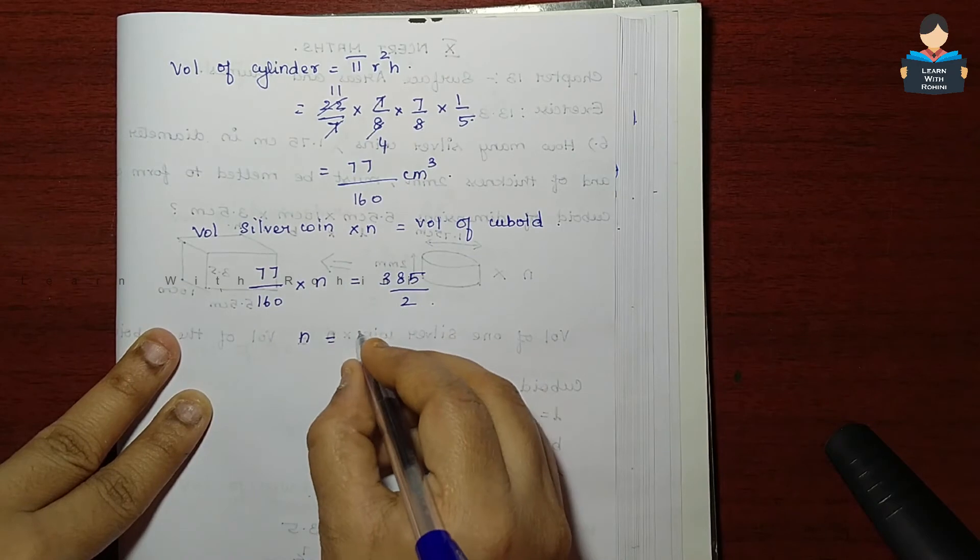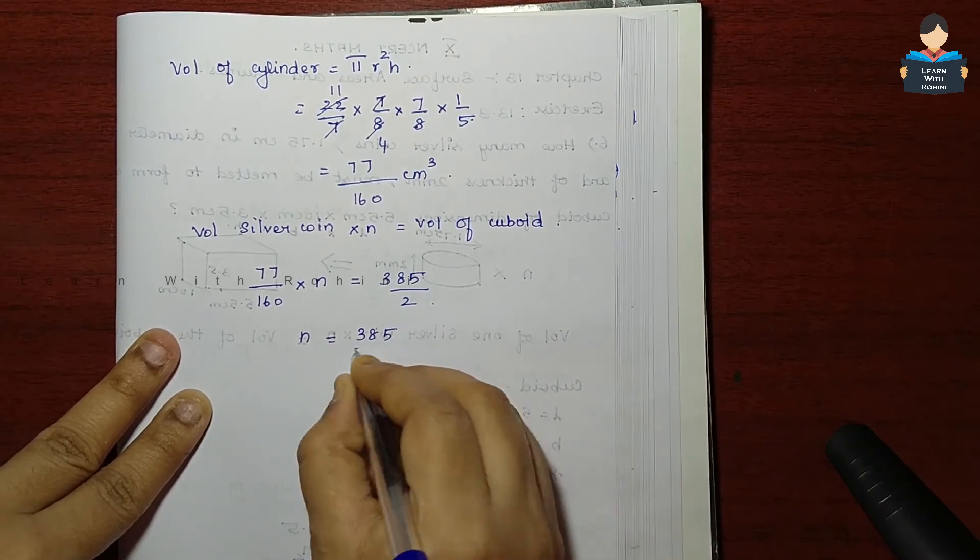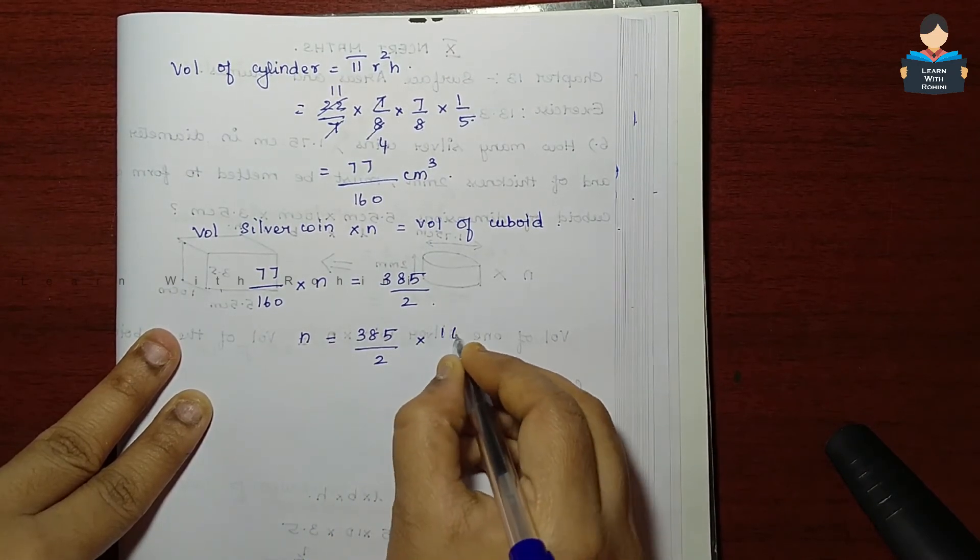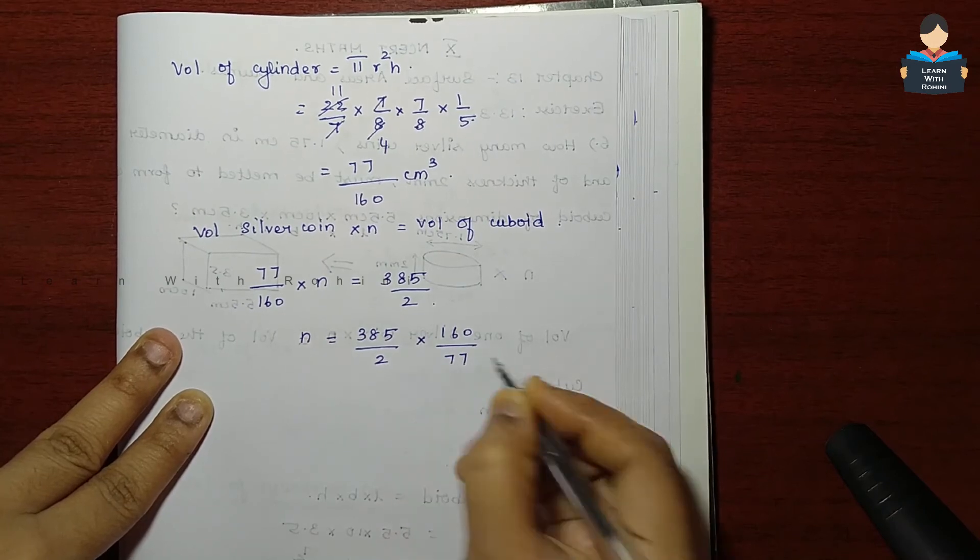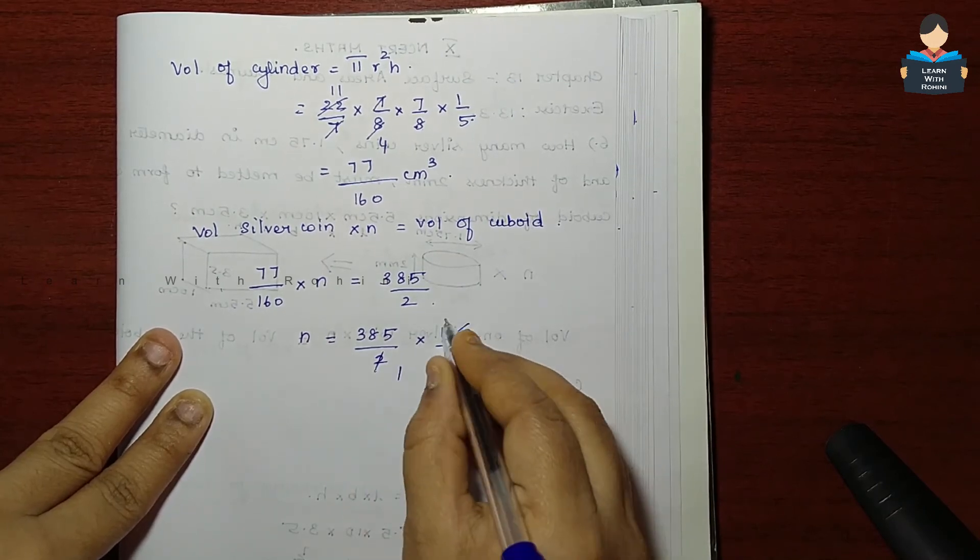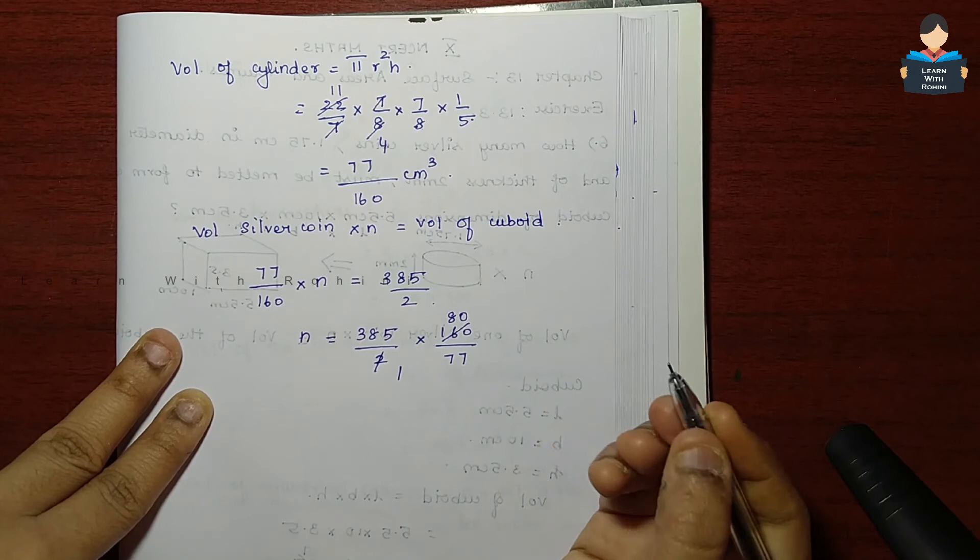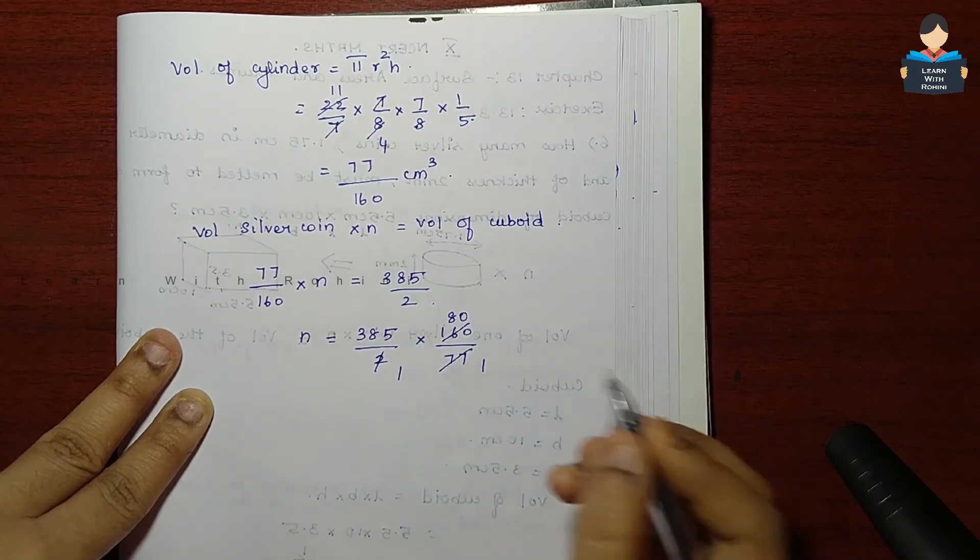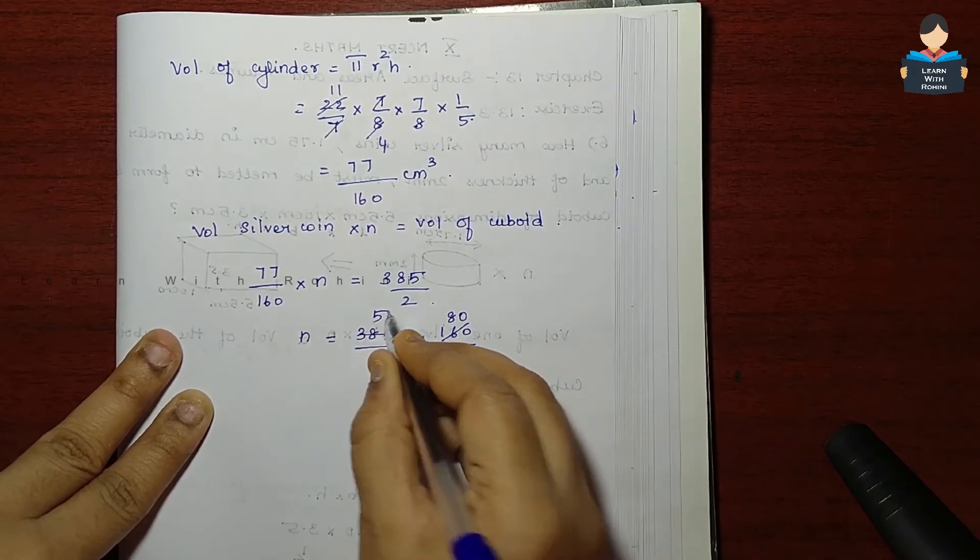So n equals 385 by 2 into 160 by 77. Dividing by 77 once, 2 into 80 twice, simplifying: 5 eights are 40, gives 0, so 400.